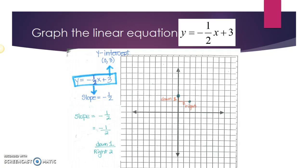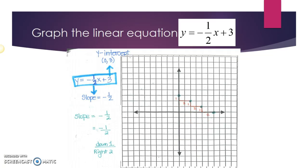You can see I have the point at zero comma three, and then I travel down one unit and two units to the right to get another ordered pair. Now that I have established my slope pattern, I can continue this process.